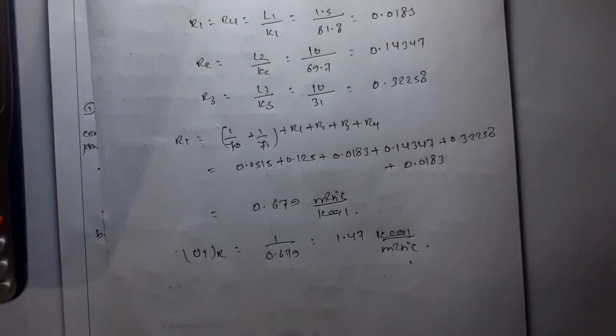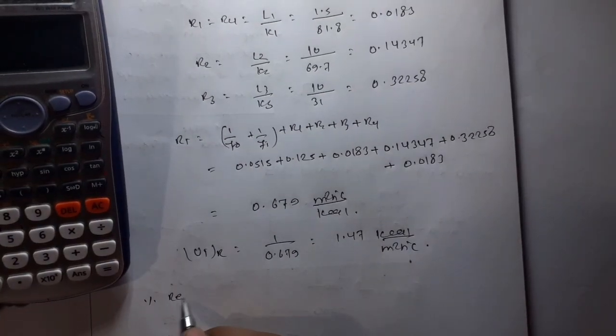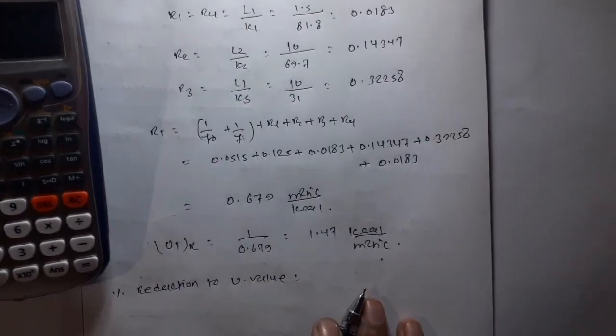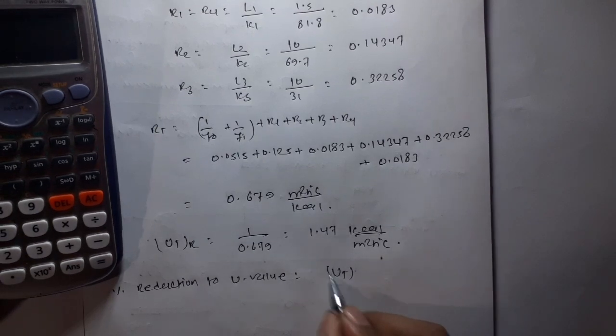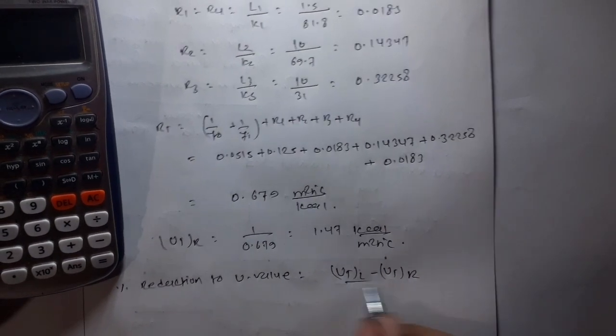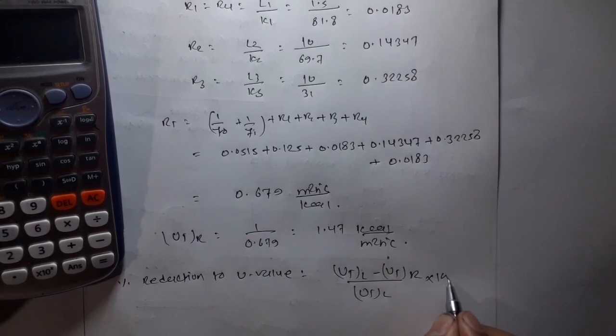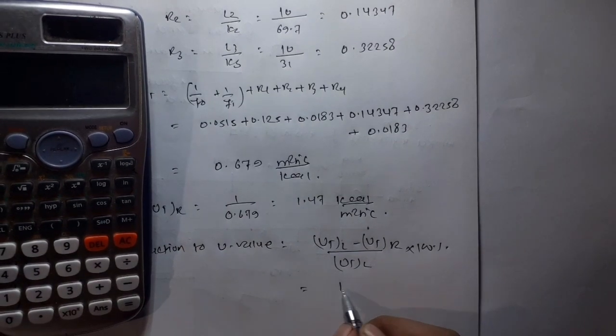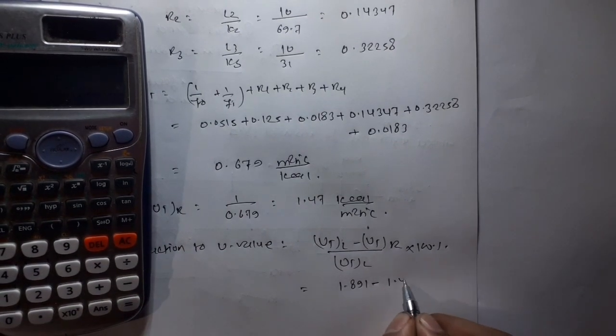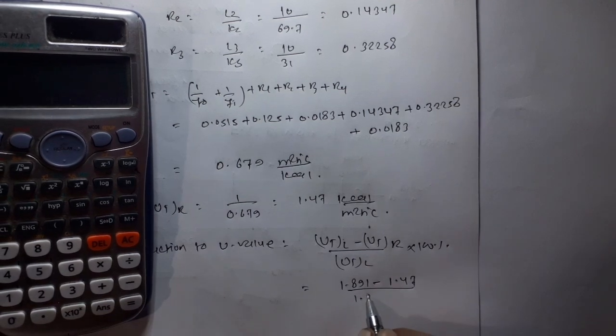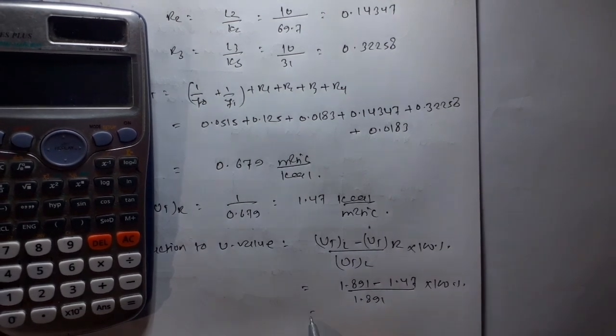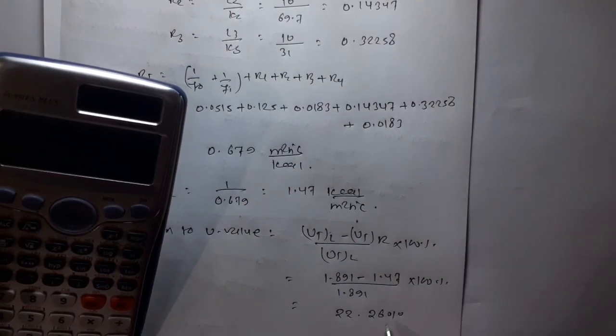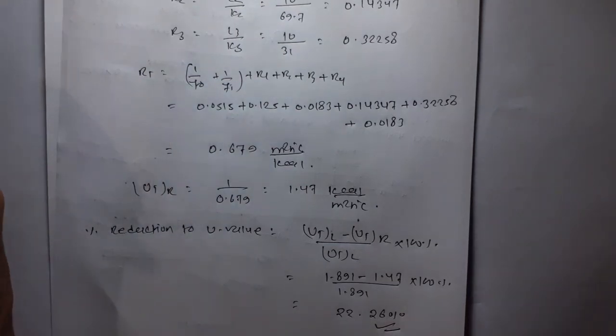The percentage reduction is U1 minus U2 upon U1 times 100 percent. 1.891 minus 1.47 upon 1.891 times 100 percent equals 22.266 percent.